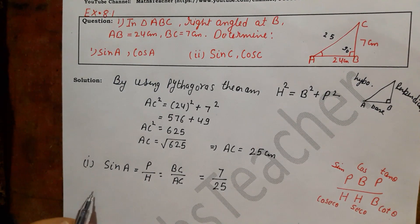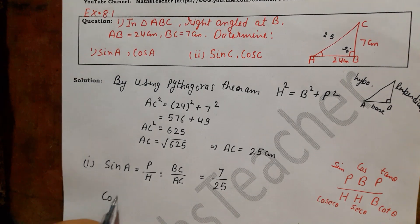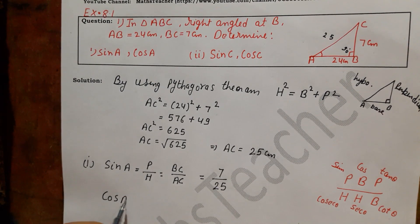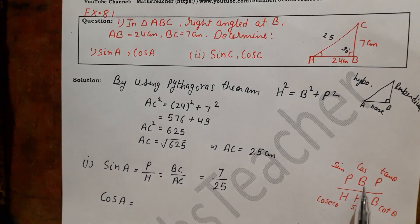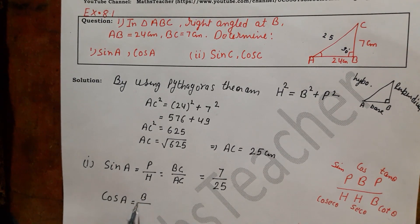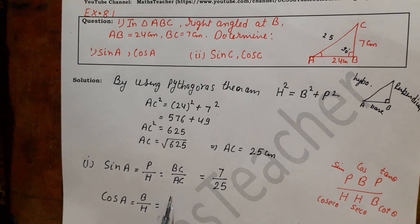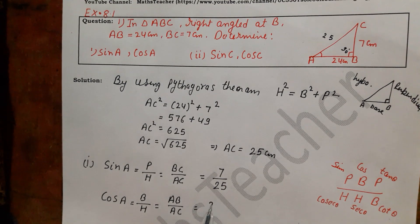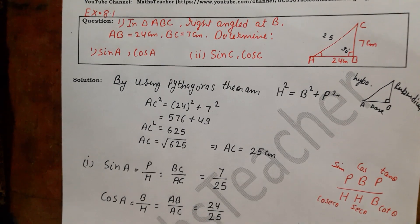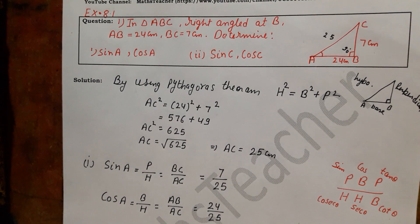Now the second part: we have to solve cos A. Cos is base upon hypotenuse. The base is AB and the hypotenuse is AC. Putting in the values, AB is 24 and AC is 25, so cos A equals 24 upon 25.